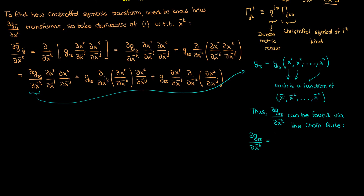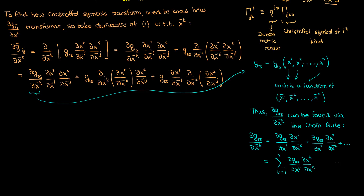Recognizing that each of the unbarred coordinates is in general a function of x super k bar, the partial of g sub rs with respect to x super k bar is the partial with respect to x super 1 times the partial of x super 1 with respect to x super k bar, plus the partial of g sub rs with respect to x super 2 times the partial of x super 2 with respect to x super k bar, and so on. You can convert this to a summation with dummy index t, and using Einstein notation write this as the partial of g sub rs with respect to x super t times the partial of x super t with respect to x super k bar, where t is summed over as a dummy index.